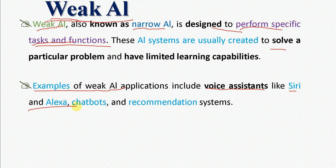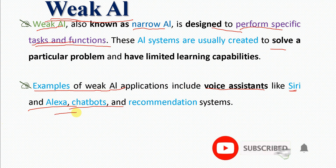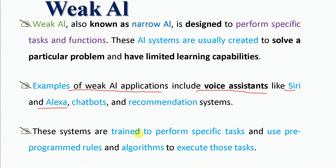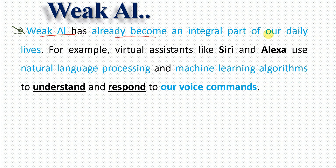Examples of weak AI applications include voice assistants like Siri and Alexa. These systems are trained to perform specific tasks and use pre-programmed rules and algorithms to execute those tasks and instructions. Weak AI has already become an integral part of our daily life.